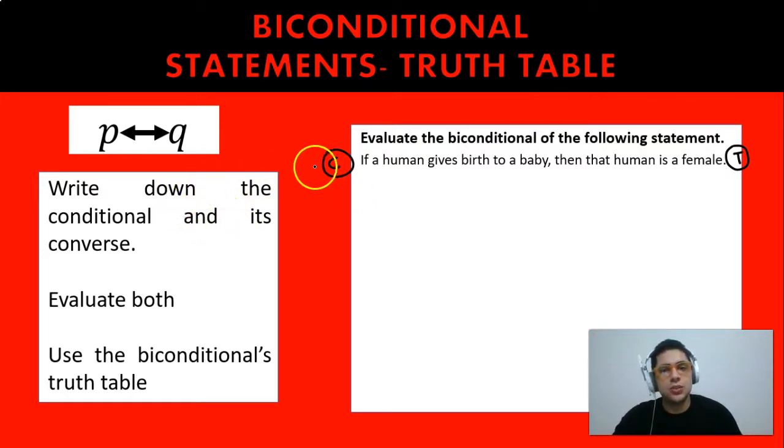Now first we're going to write down the conditional which was already given to us, and we're going to write down the converse. Now in order to write the converse, you have to remember that the converse is Q then P.